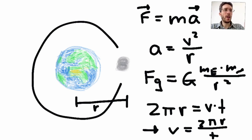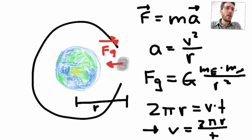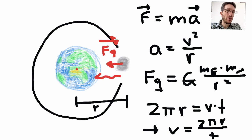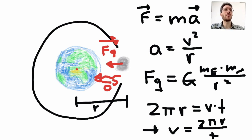First, we do the free body diagram of the Moon. What forces are acting on the Moon? There is actually only one acting on the Moon, which is the force of gravity, pointing towards the center of the Earth. We also know the centripetal acceleration points toward the center of the Earth. The centripetal acceleration actually points to the center of the Moon's circular orbit, which is not exactly the center of the Earth — but we'll see in our calculations how close we get. We're also assuming a circular path, though we're not certain it actually is.